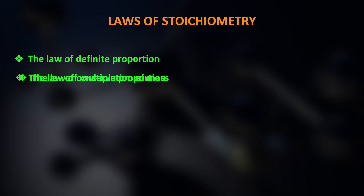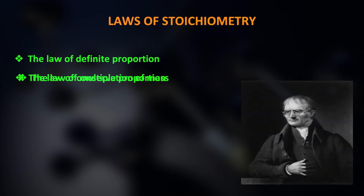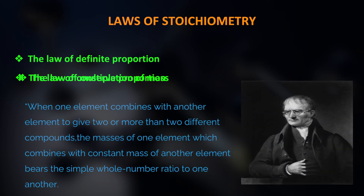The law of multiple proportions states that when one element combines with another element to give two or more different compounds, the masses of one element which combine with the constant mass of another bear a simple whole number ratio to one another. If two elements combine to form two different compounds, the masses of one element combining with the constant mass of the other always bear a simple whole number ratio.